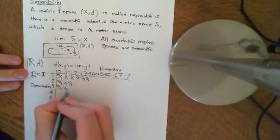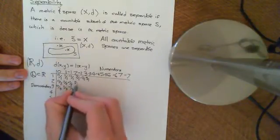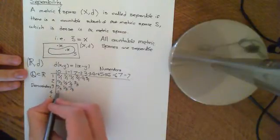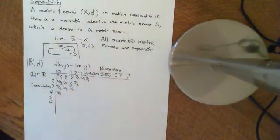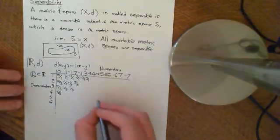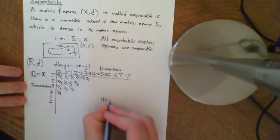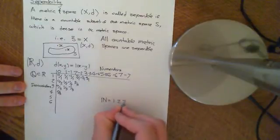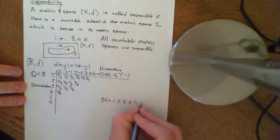We'll also put in one third, negative one third, two thirds, and zero over four for good measure. The way to prove a set is countable is to show that it can be put in bijection with the natural numbers. The natural numbers are the set one, two, three, four, five, six, seven, etc.